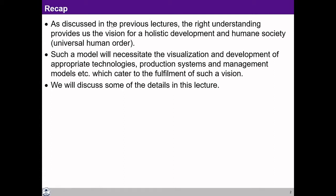Once we have this right understanding, this understanding of existential harmony, coexistence, harmony and relationship, we are able to perceive human being in the context of this existential harmony as an active and integrated unit of this existence. Then we have clarity about the role of human being in existence, and we can understand what holistic development would mean and what form human society would take.